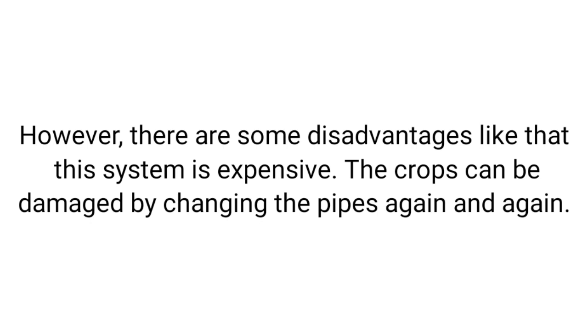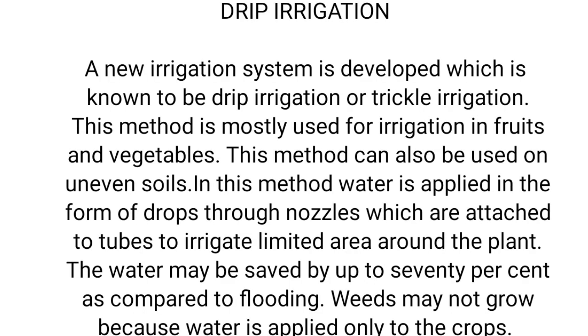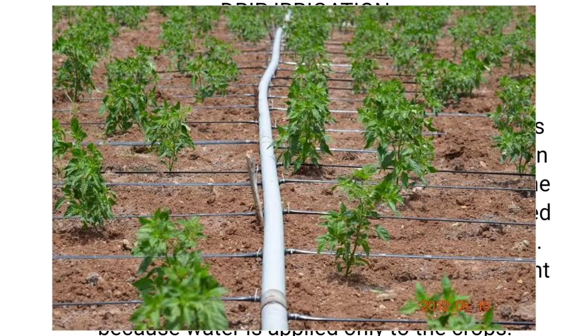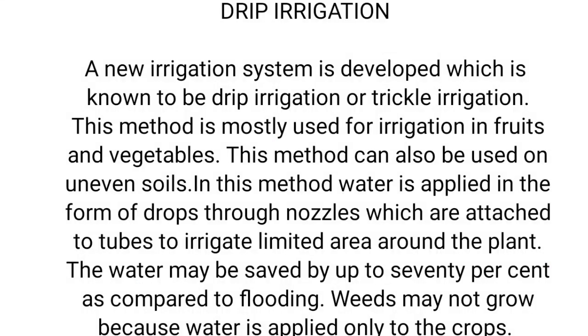Changing pipes repeatedly can damage crops. Drip irrigation is also a modern method in which water is supplied in the form of drops through nozzles attached to tubes. Water is delivered directly to the plants drop by drop, and weeds may not grow because there is no excessive water flow. With this we come to the end of the video — please share it, subscribe to the channel, and thank you for watching.